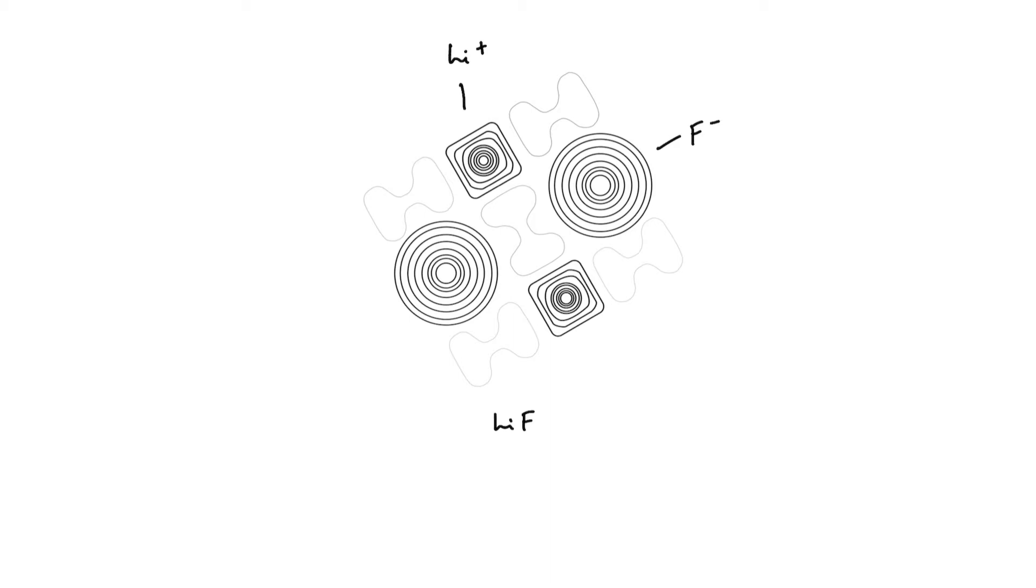The electron density virtually falls to zero between the ions and this is consistent with our model of ionic bonding in which an electron is transferred from lithium, so lithium loses an electron to the fluoride ion which gains the electron to form oppositely charged ions.